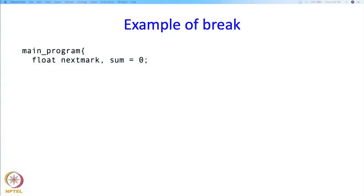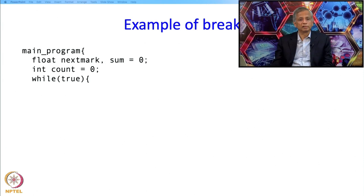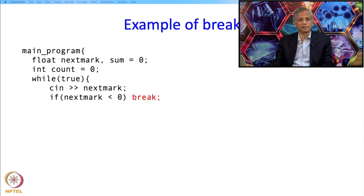So here is an example of a break. So, main program, float next mark, sum as before, count is 0. And now we are going to run the loop, but we are going to run it with a condition true. So we are going to read in the mark and if the next mark is less than 0 then we are going to break. So the consequent over here is the single word statement break. Otherwise we are going to add next mark to sum, we are going to increment count, and that is it as far as the loop is concerned, and then we are going to print.